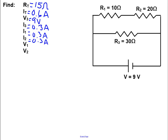To solve for the voltage at Resistor 1, I'm going to come back to Ohm's Law. My voltage equals my current at Resistor 1 times my resistance at Resistor 1.